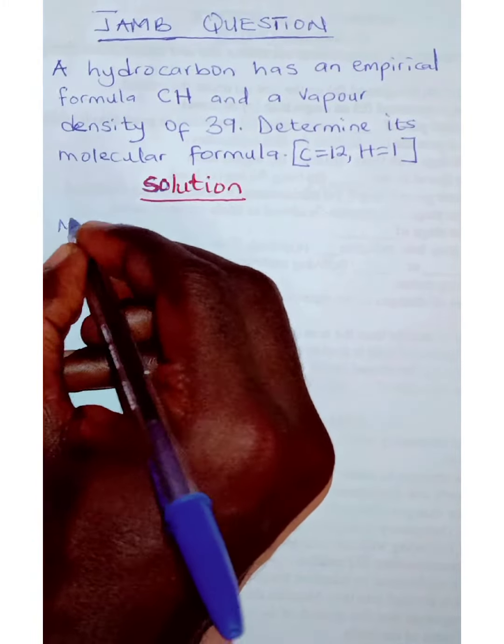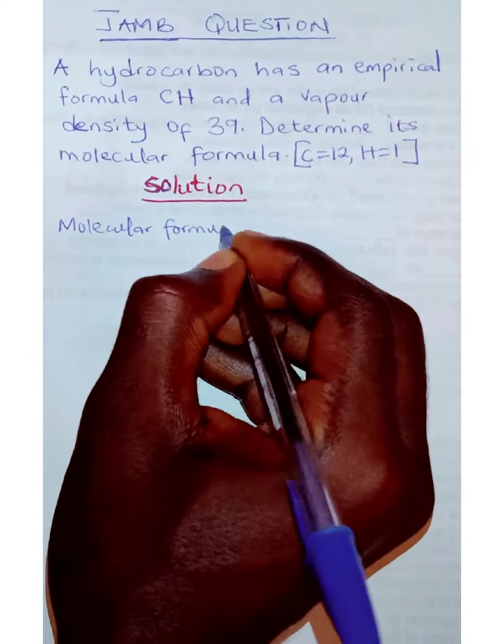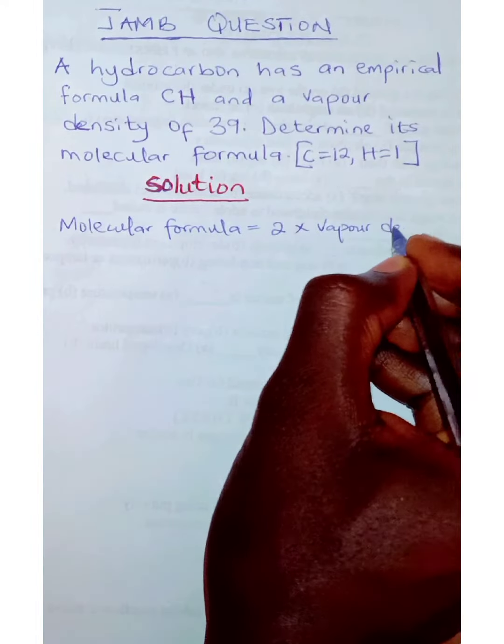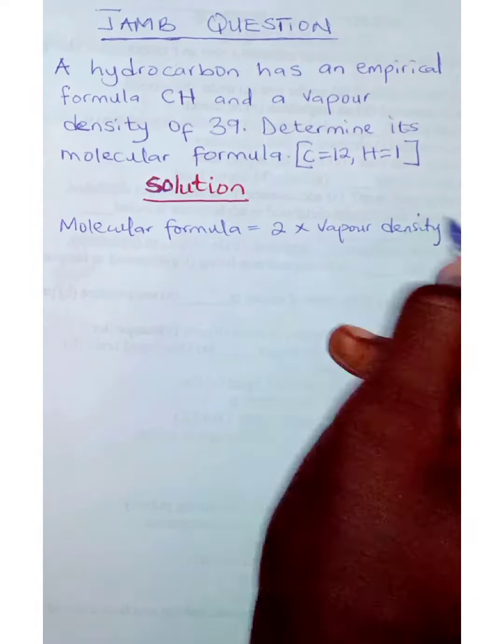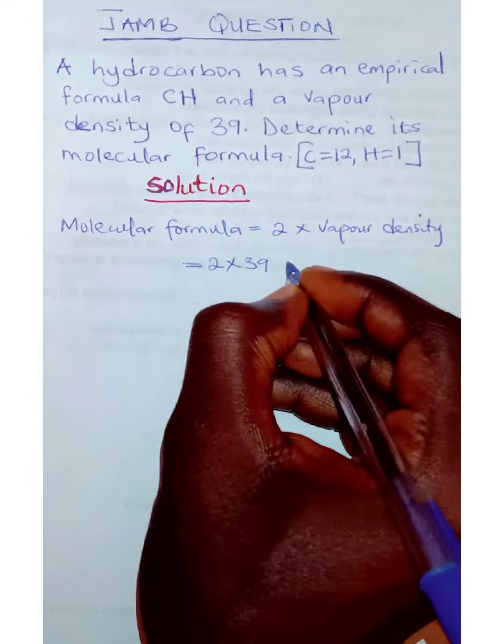The first thing to do is remember that molecular formula is equal to 2 times vapor density. So this is equal to 2 times 39, which will be 78.